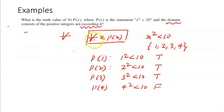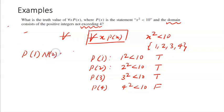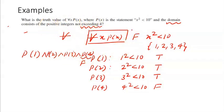As we discussed, for 'for all x, p(x)' to be true, it should be true at all values — p(1), p(2), p(3), and p(4) should all be true. But we noted that p(4) is false. Here, 4 is the counter example — we found one value of x for which the statement is false. That is why 'for all x, p(x)' becomes a false statement.